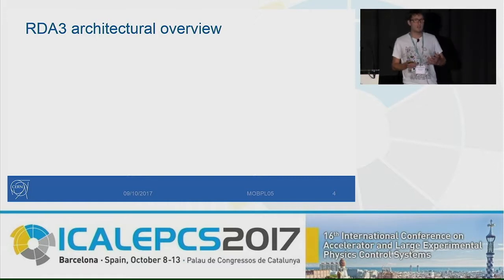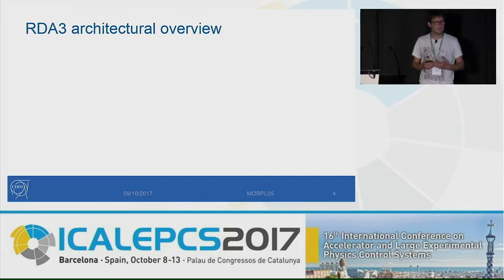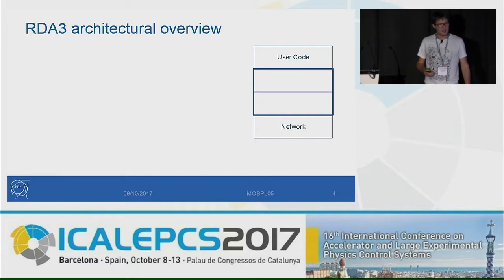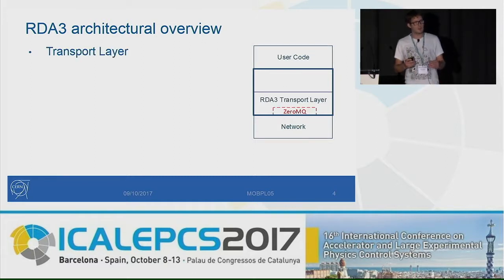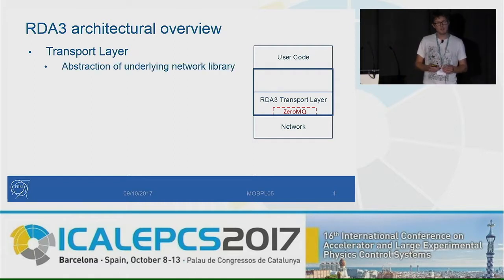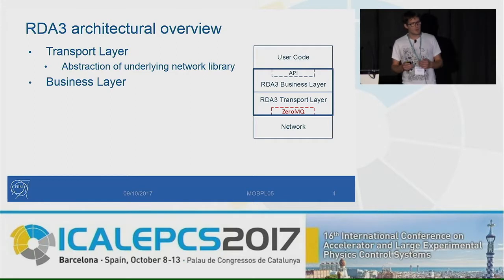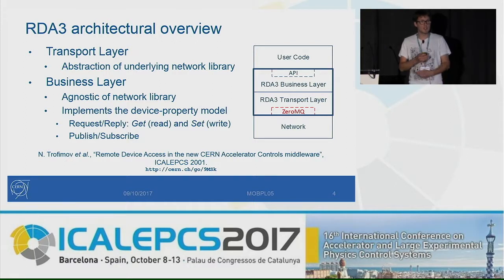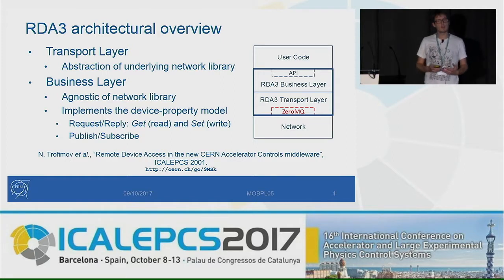Let's dig a bit into the internal architecture of the solution we implemented. On the bottom, we have the network. On top, we have the user code — all the logic the user wants to inject in the client and server. In the middle, we have our middleware library, RDA3. We decided to split it into two separated layers. The first layer on the bottom we called the transport layer, which is basically an abstraction of the underlying network library — 0MQ in our case. On top of the transport, you have the business layer, which is agnostic of the network library because it only accesses the network through the transport.